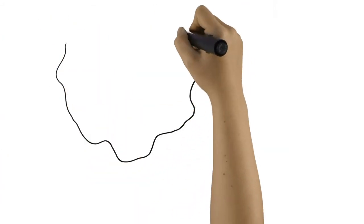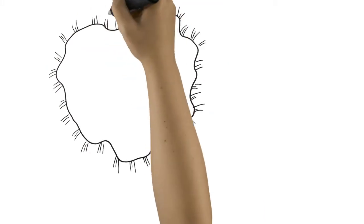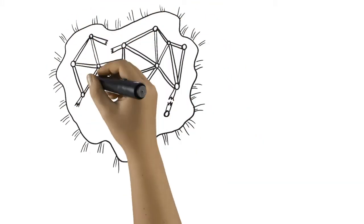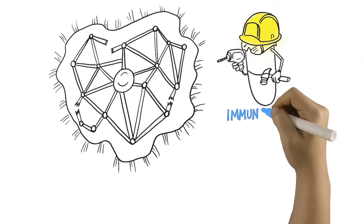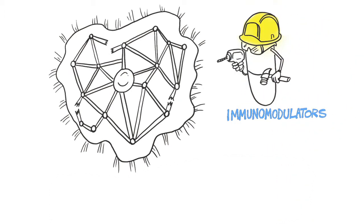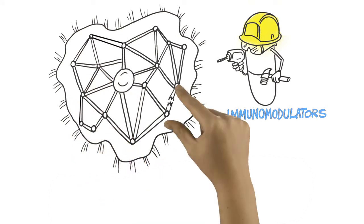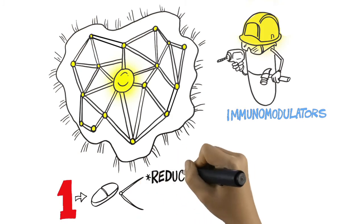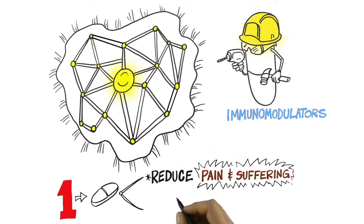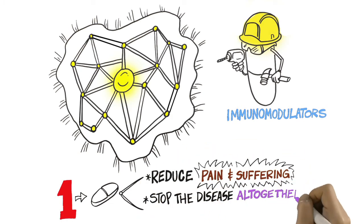Now scientists and innovators are developing new treatments that don't just pull the plug on the affected parts of the immune system, but actually restore the balance itself. These drugs are called immunomodulators. And they work by going inside cells to reestablish the connections between immune regulators. That means it might be possible to take one pill that would not only reduce pain and suffering, but actually stop the disease altogether.